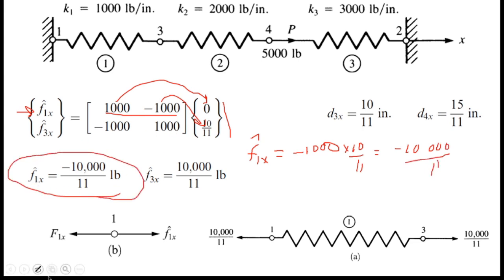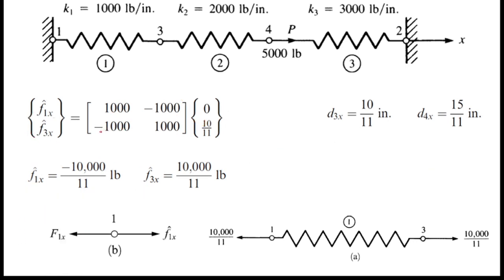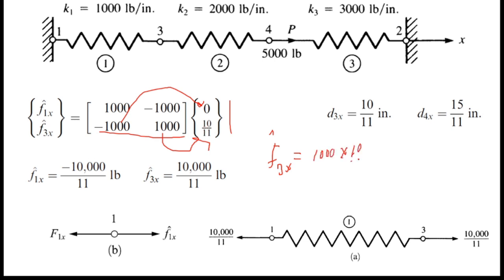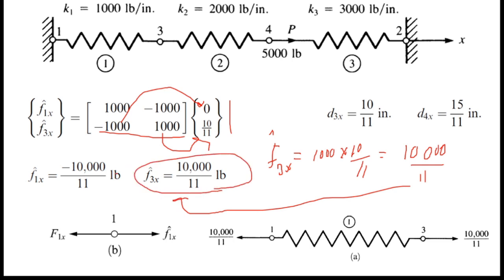For f3x-cap, I multiply that row with the displacement column: 1000 times 10/11, which simplifies to 10,000/11. So f3x-cap equals 10,000/11. The units are lb for both forces.